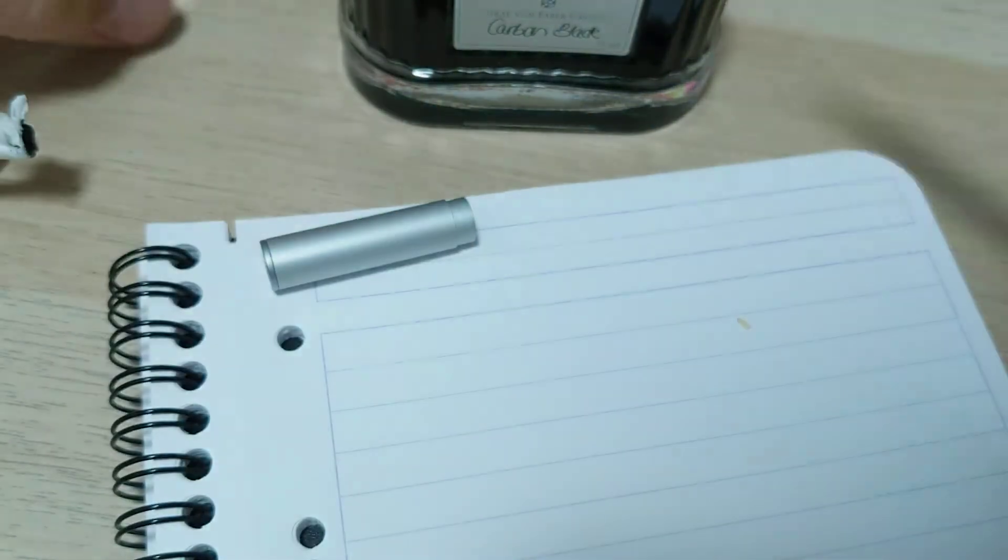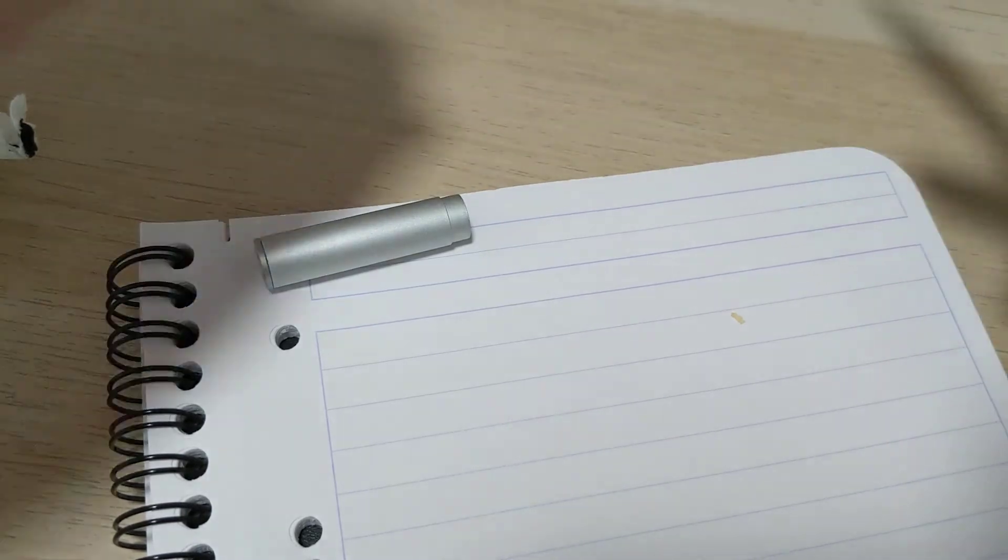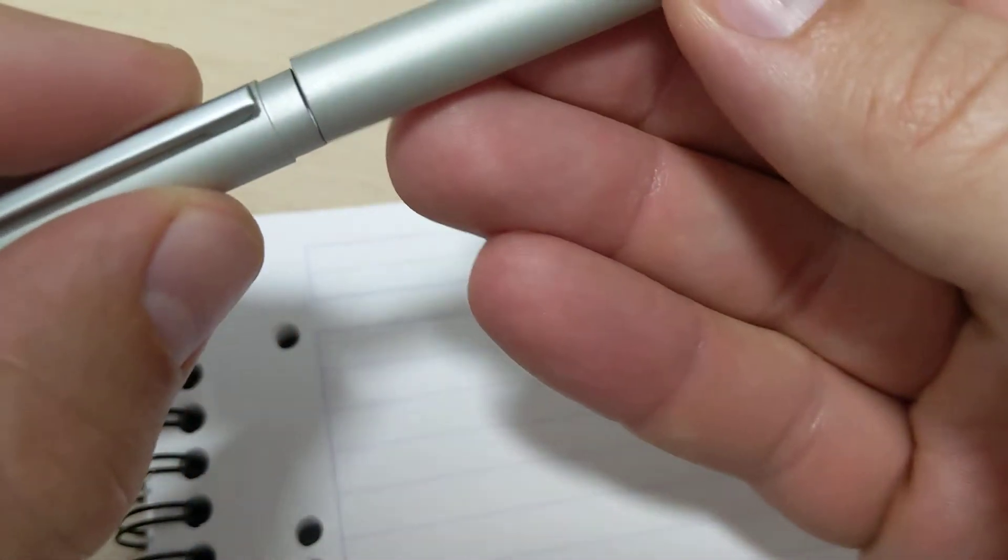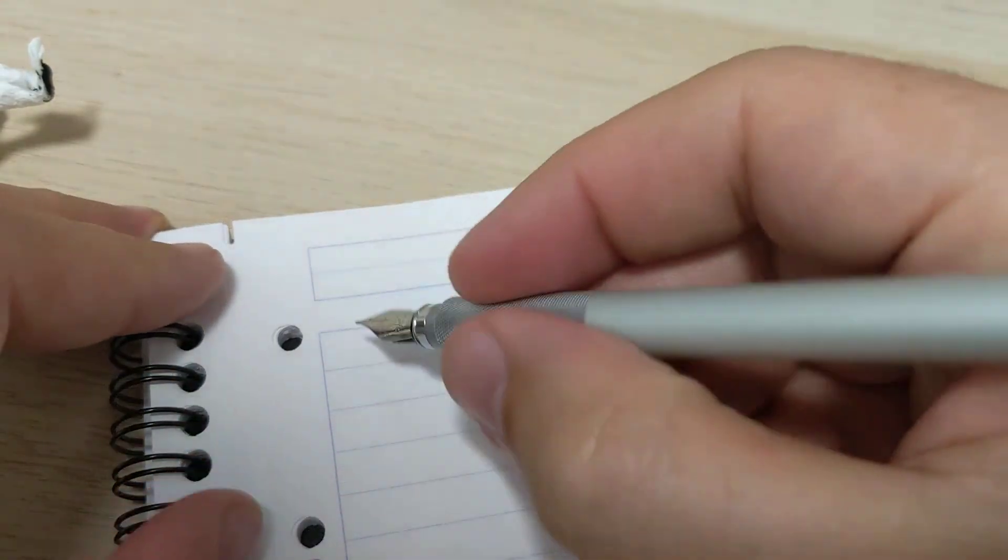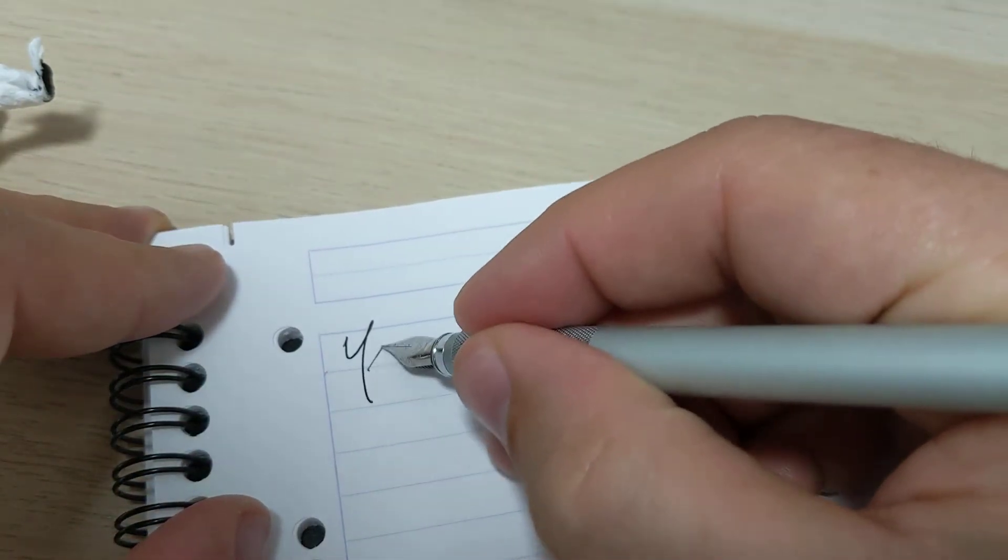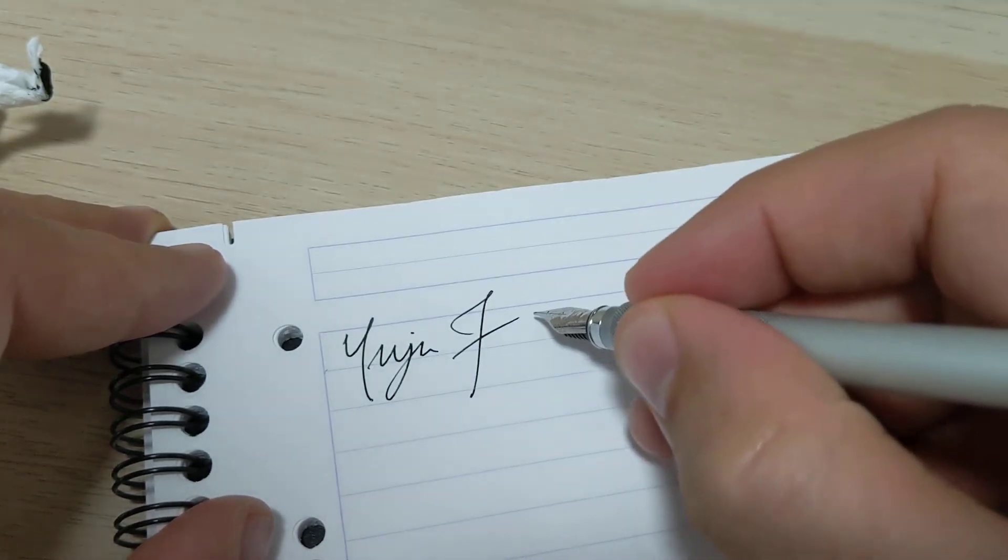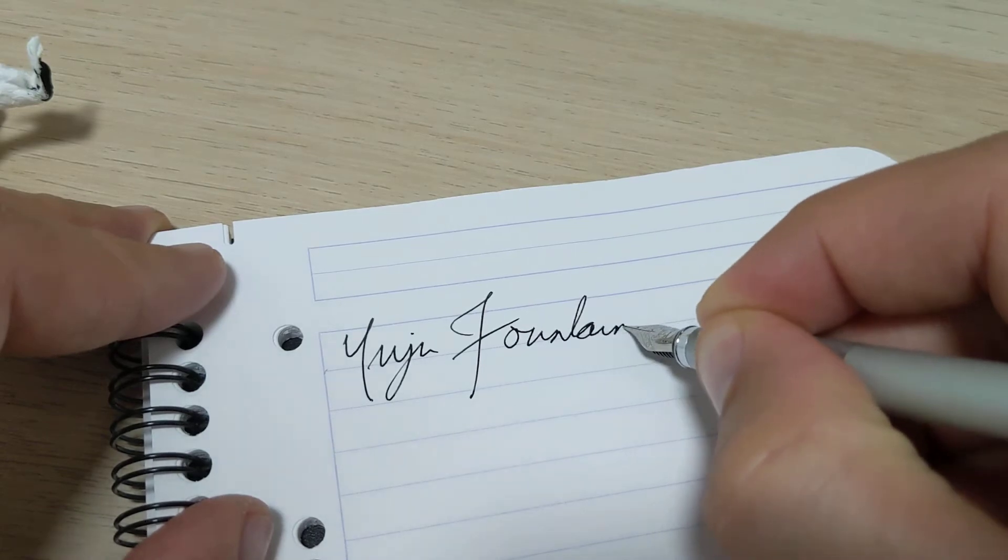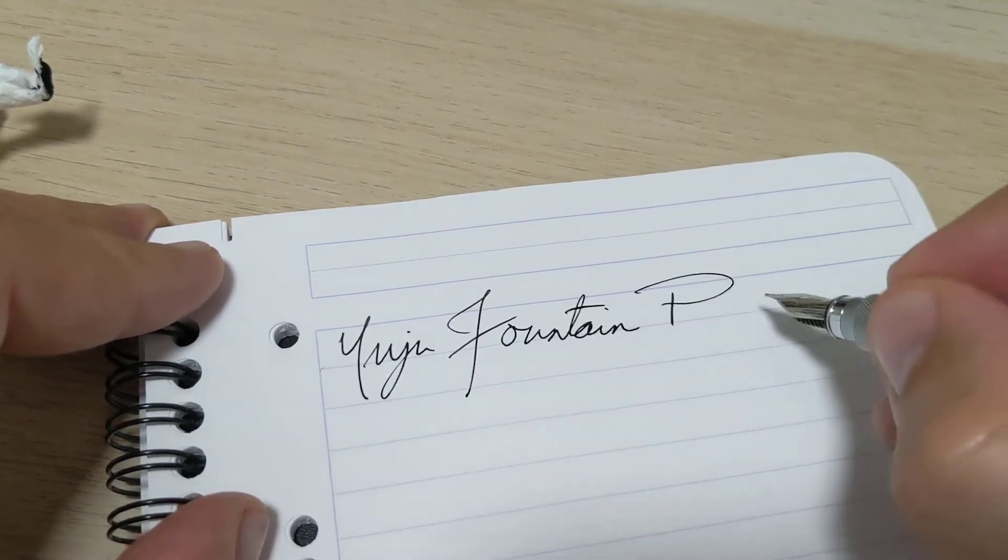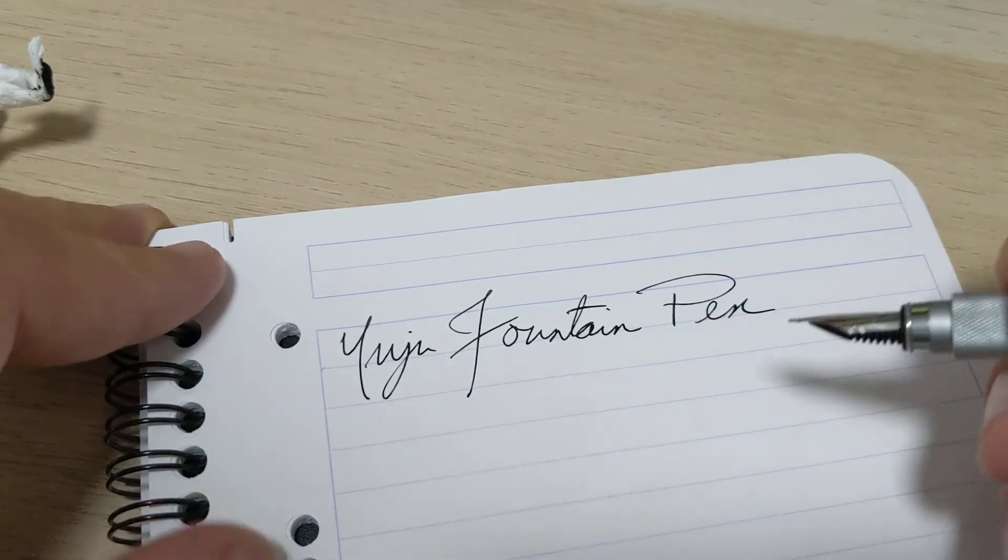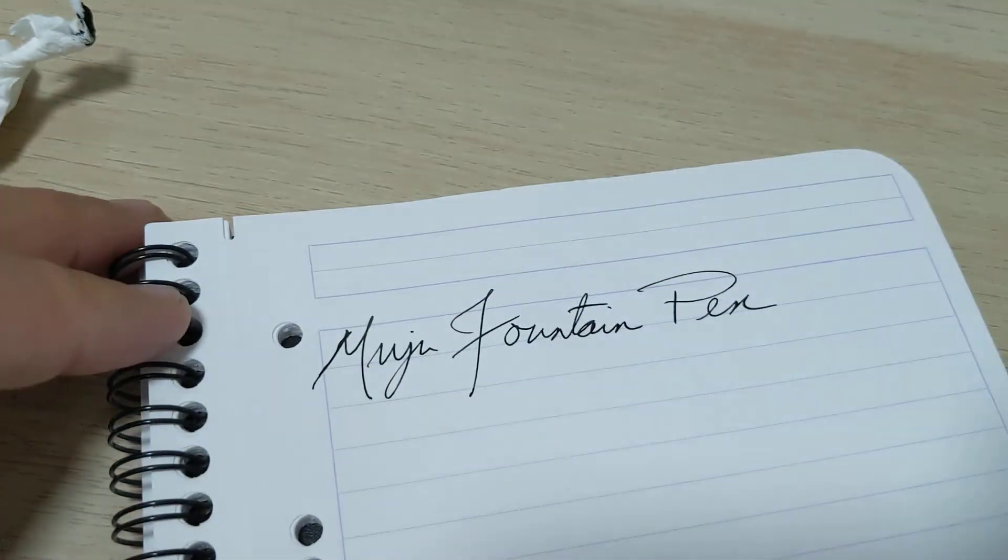There we go. Let's put the cap back on. That would be terrible. I like to write with it posted. And we got the Muji. Get that out of there. Missed the first uptick there. There we go. Oh that's terrible. Anyways, Muji fountain pen.